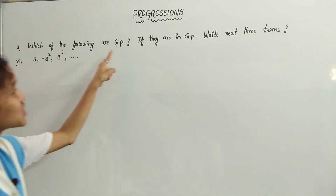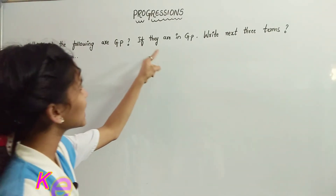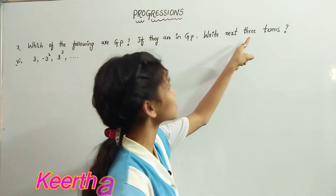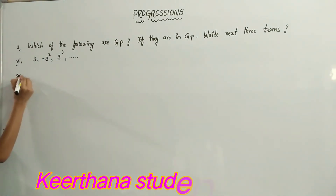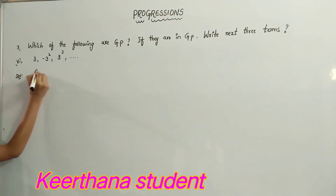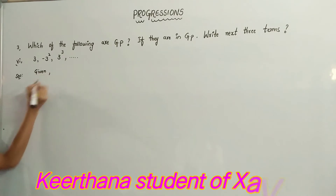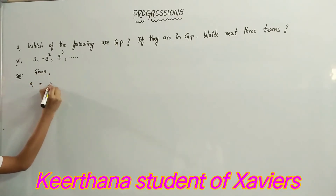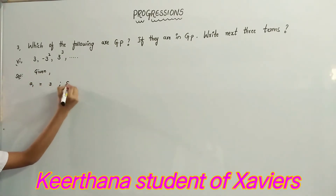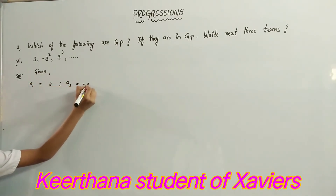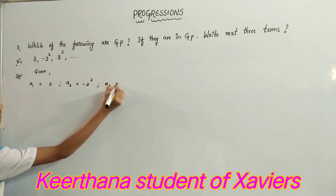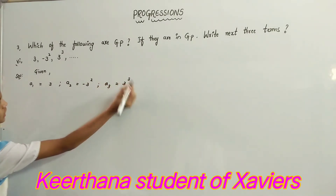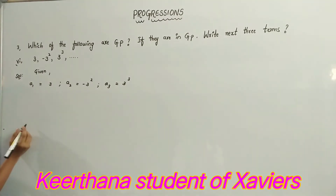Which of the following are GP? If they are in GP, write the next three terms. Given: A1 equals 3, A2 equals minus 3 squared, A3 equals 3 cubed. Now we have to find the common ratio.